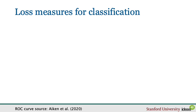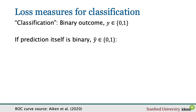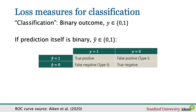A second canonical case of prediction is when the outcome of interest is binary — we call this classification. If the prediction itself is binary, there are two ways to make an error. The first case is when the truth is 0 but the prediction is 1 — a false positive or type 1 error. The second is when the truth is 1 but the prediction is 0 — a false negative or type 2 error.